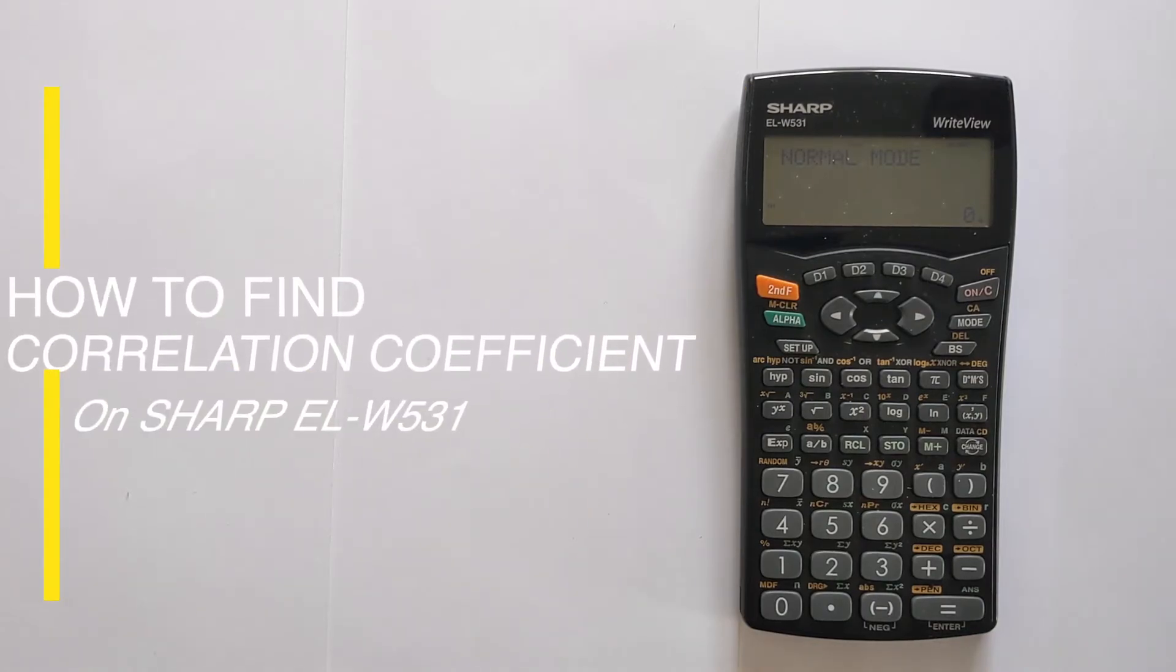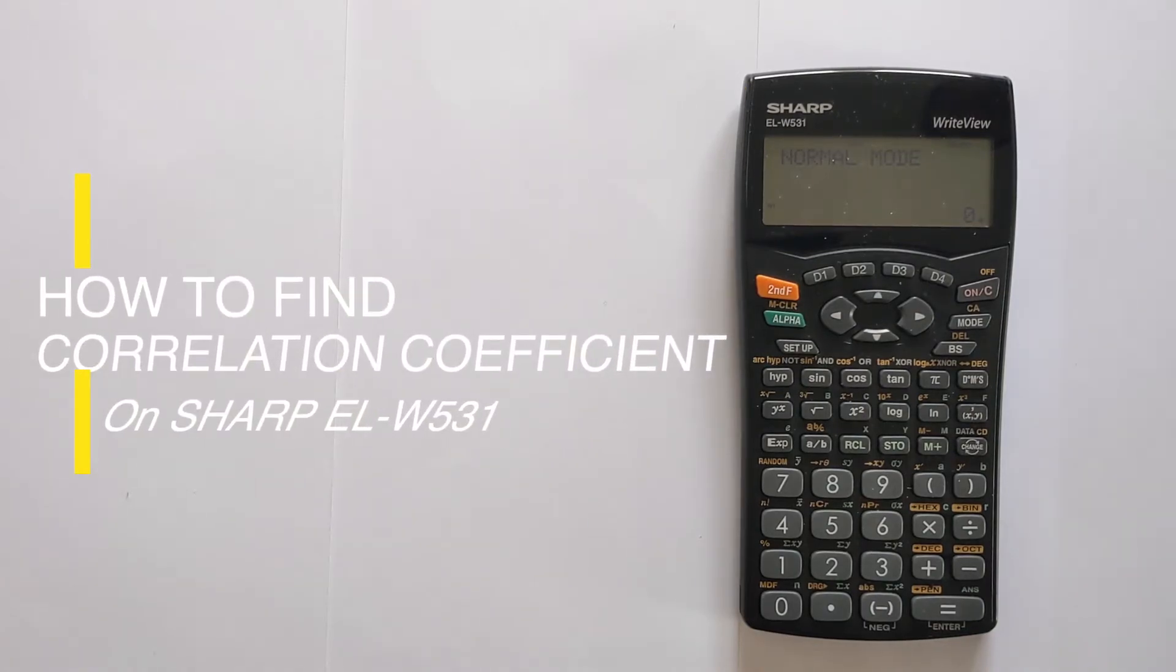In this video, I'm going to show you how you can find the correlation coefficient, also known as Pearson's R, using a Sharp ELW531 calculator.